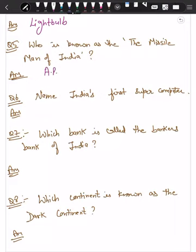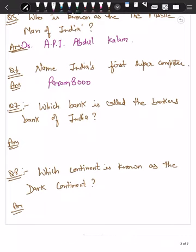Question number six is: Name India's first supercomputer. India ka pehla supercomputer ka aapko naam batana hai. Konsa hai India ka pehla first supercomputer? Aapka Param 8000. Param 8000 is India's first supercomputer.